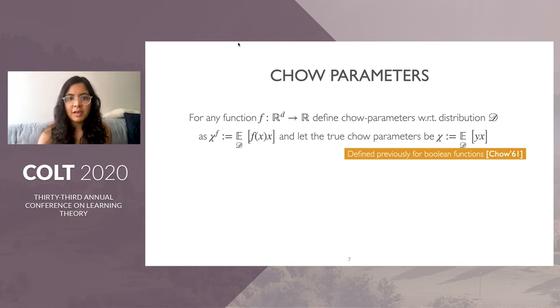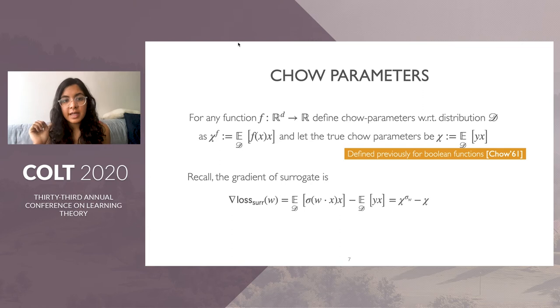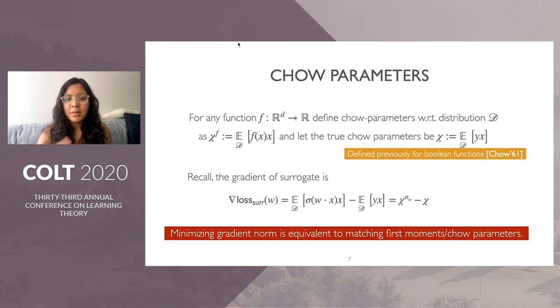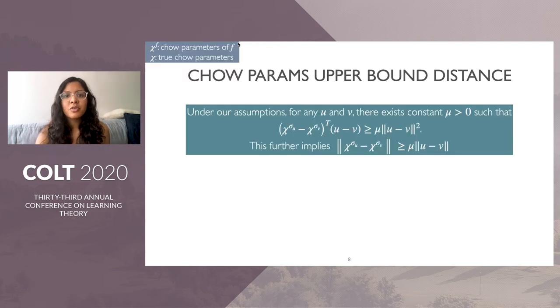Recall the gradient of the surrogate has this form, which is exactly Chi of sigma W minus the true Chow parameters Chi. So minimizing this gradient norm is equivalent to finding a W that matches the Chow parameters to the true Chow parameters, like matching first moments. So this surrogate loss is trying to match the first moments, which carry enough information for our approximate guarantee.